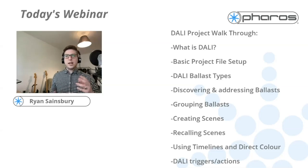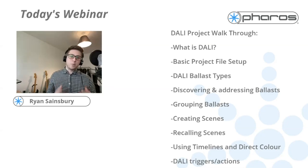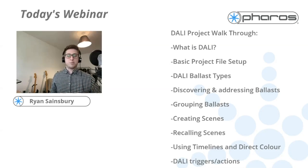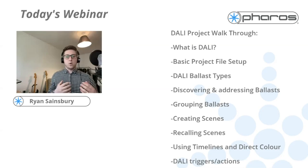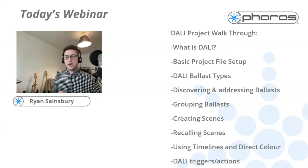We're going to be looking at the things on screen now. We want to start off by talking about what the DALI protocol is and how to set up the basics within your project file. We'll also look at the different types of ballasts, how to discover and address groups, and finally how to recall scenes or create DALI programming on timelines, and then use triggers and actions within Pharos to pull that all together.